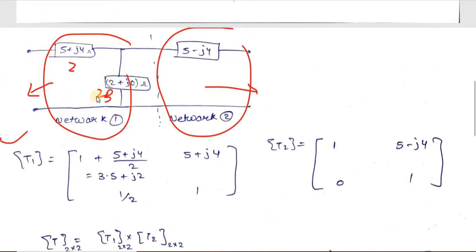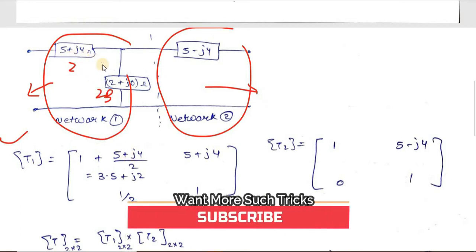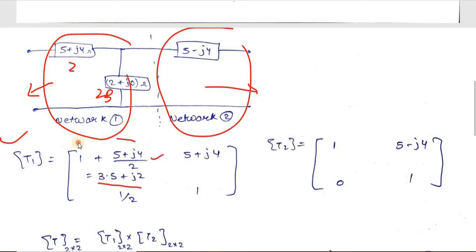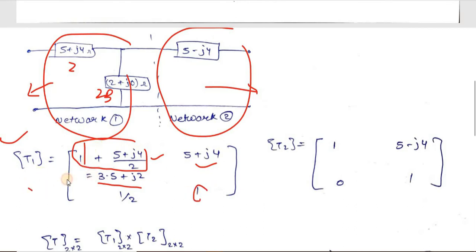For the first network, ZA = 5+j4 and ZB = 2+j0. So A = 1 + ZA/ZB = 1 + (5+j4)/2 = 3.5+j2. B = ZA = 5+j4. C = 1/ZB = 1/2 = 0.5. D = 1. This gives us the T1 transmission parameter matrix for the first sub-network.